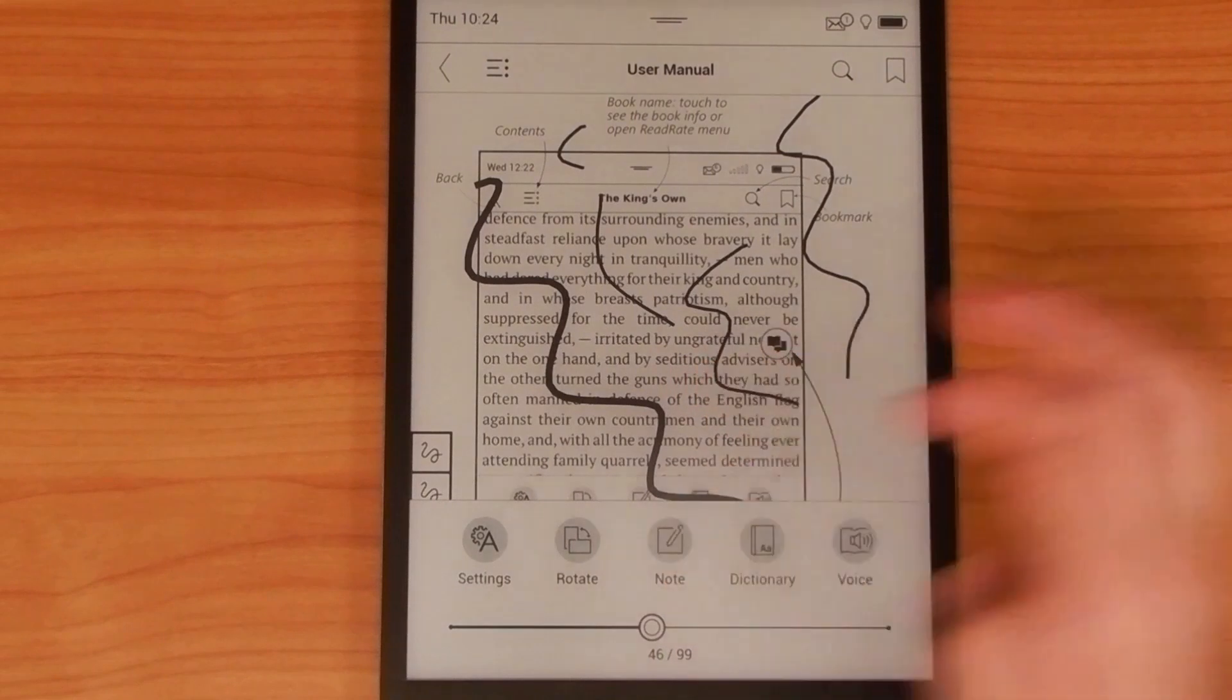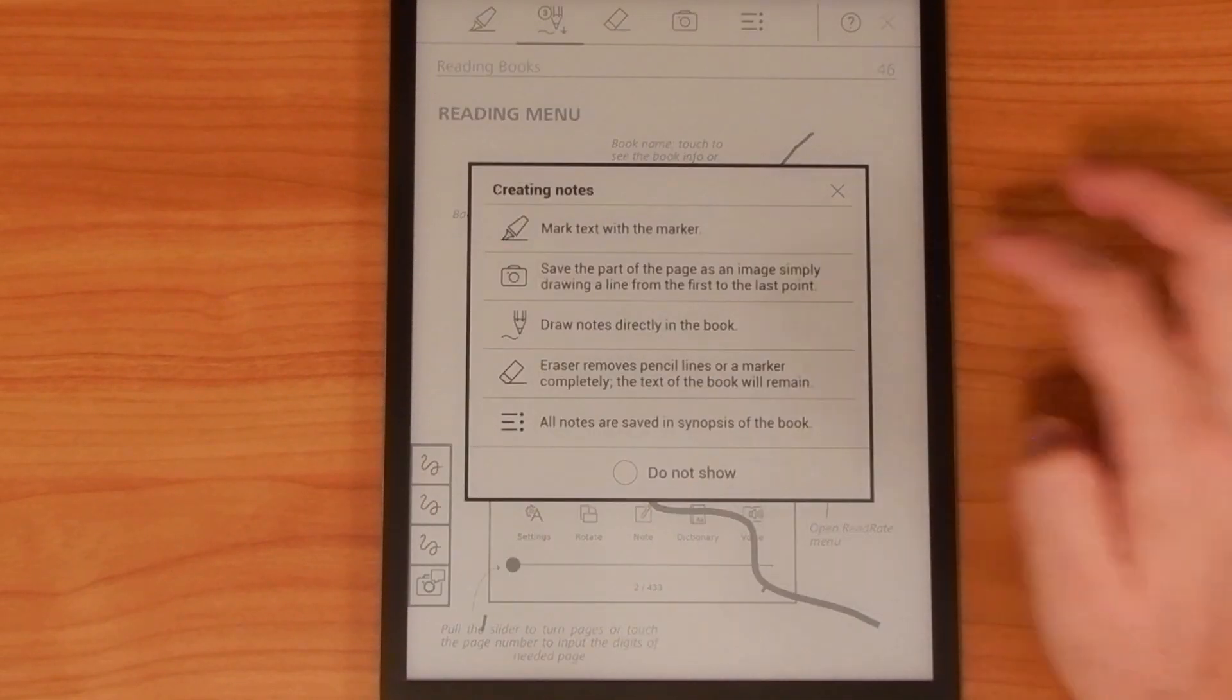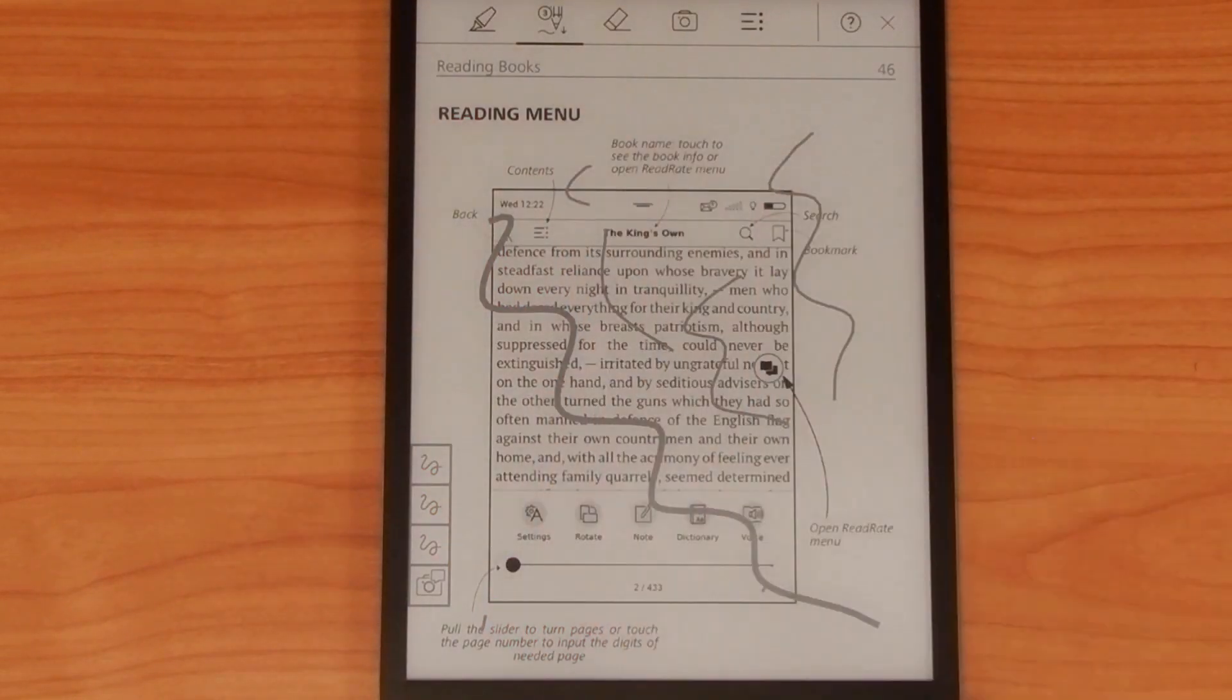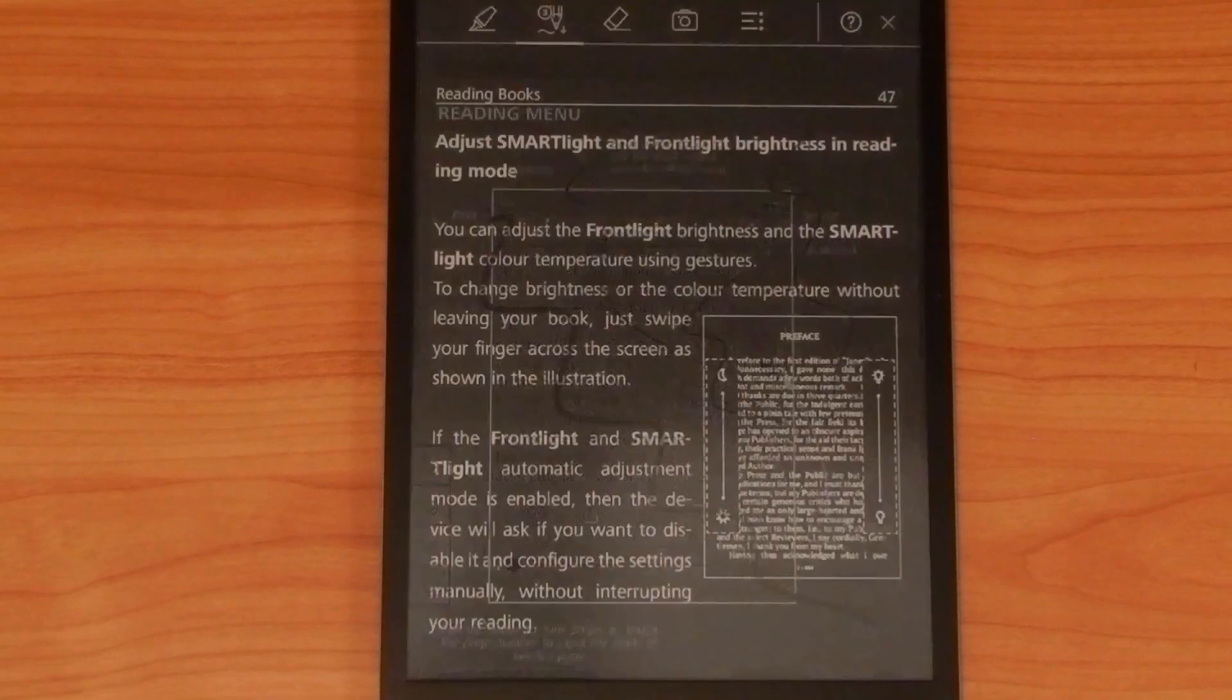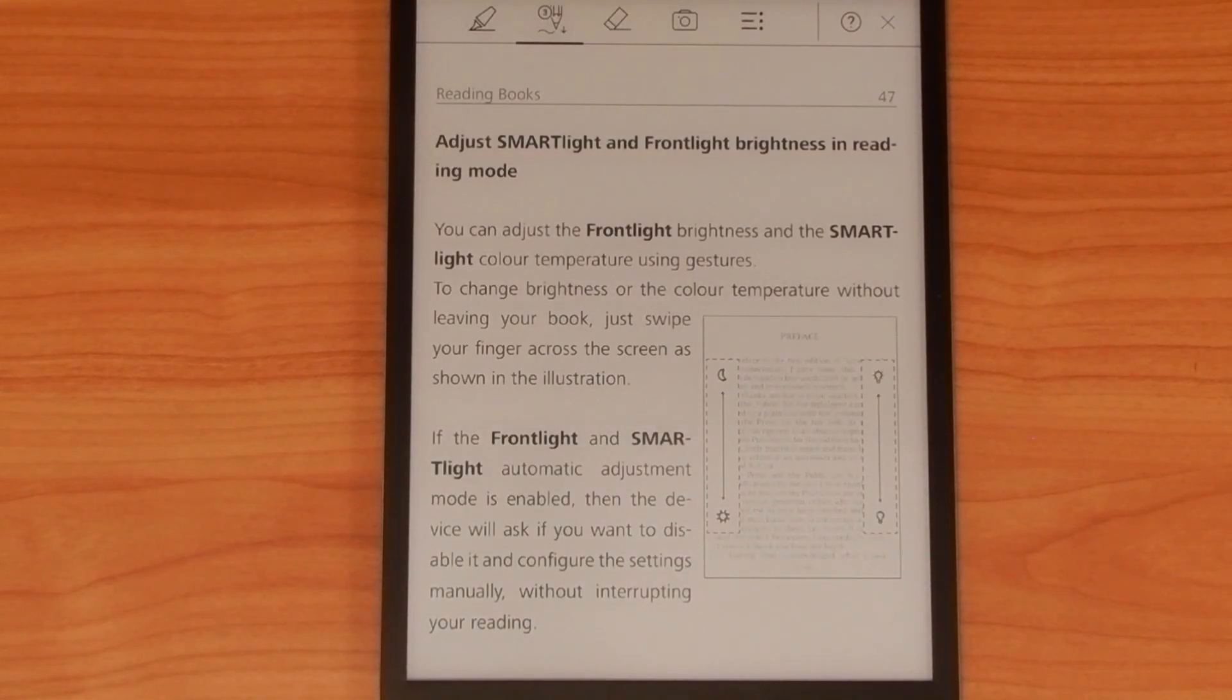In case you're wondering, you can still flip back and forth through the document while you're in the note mode. That's always a welcome feature, and it's really good to see that Pocketbook included this here.